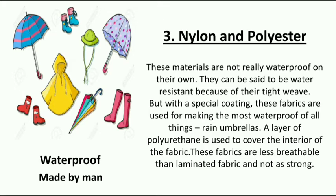These materials are not really waterproof on their own — they can be said to be water resistant because of their tight weave. But with a special coating, these fabrics are used for making very waterproof items like rain umbrellas. A layer of polyurethane is used to cover the interior of the fabric, though these fabrics are less breathable than laminated fabric and not as strong. The waterproof materials, nylon and polyester, are made by man.